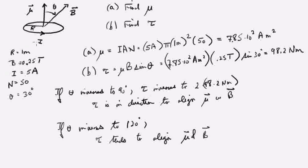So we have a current loop, as shown, and it's in a magnetic field that is inclined at 30 degrees with respect to the magnetic moment of the loop.